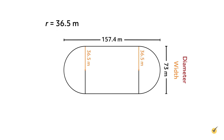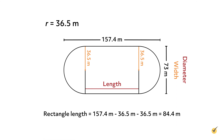That's one piece of the puzzle completed. Now we just need to find the length of the rectangle. The total length of our stadium infield is 157.4 meters, but we need to subtract the length of each semicircle from that. So we subtract the radius of the left semicircle and the right semicircle. The rectangle length is equal to 157.4 meters. If we subtract 36.5 meters twice, we'll end up with 84.4 meters.